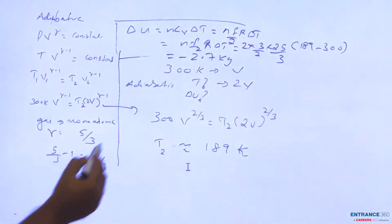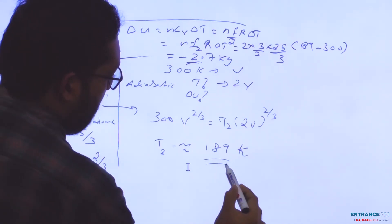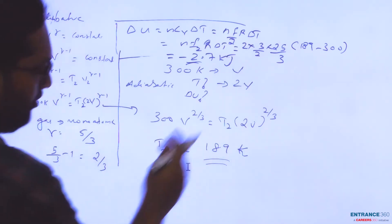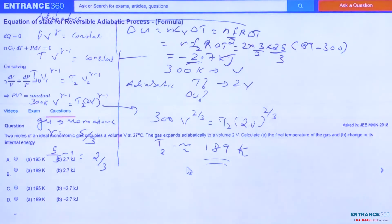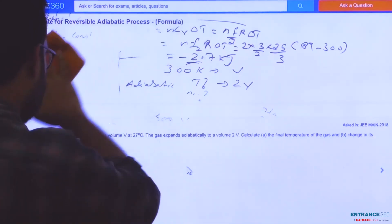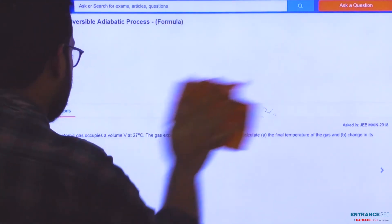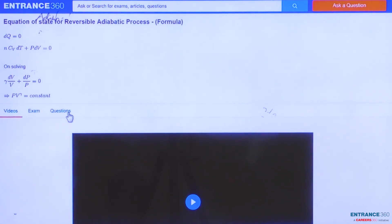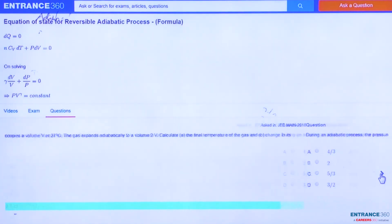So our answers are T2 is 189 Kelvin and change in internal energy is -2.7 kilojoules. This is the right answer. To know more about the equation of state for reversible adiabatic process, you can watch the video, and you can get more questions by scrolling. Thank you.